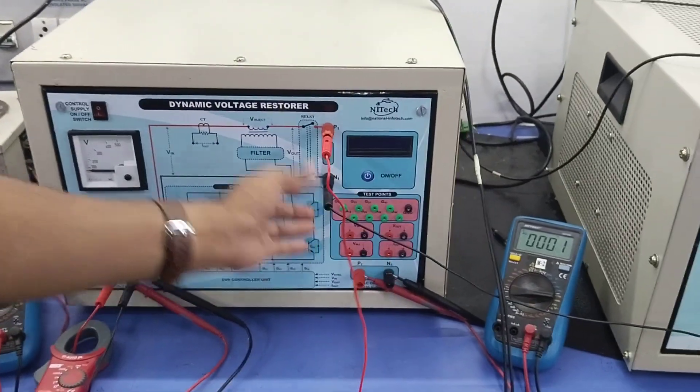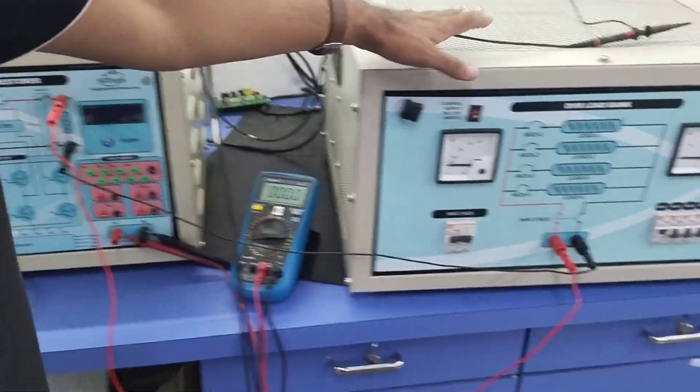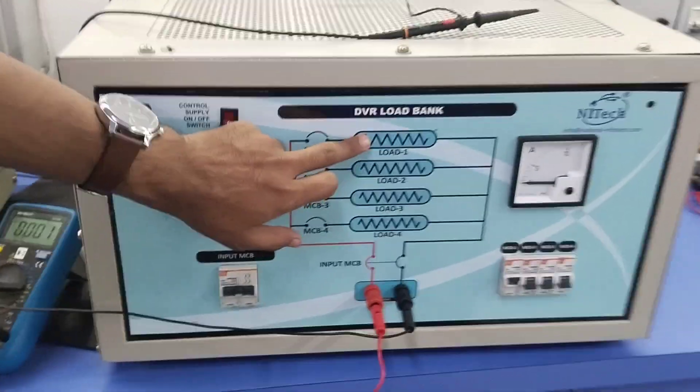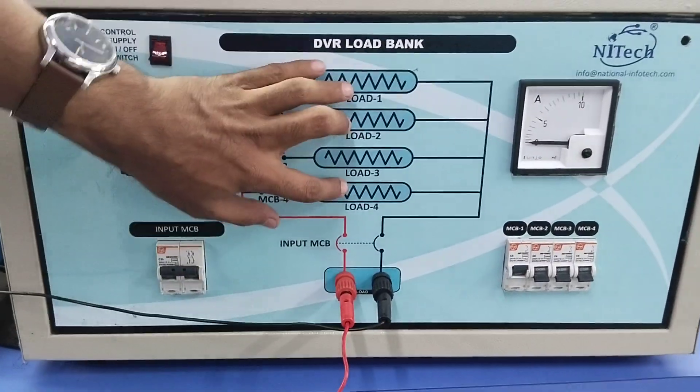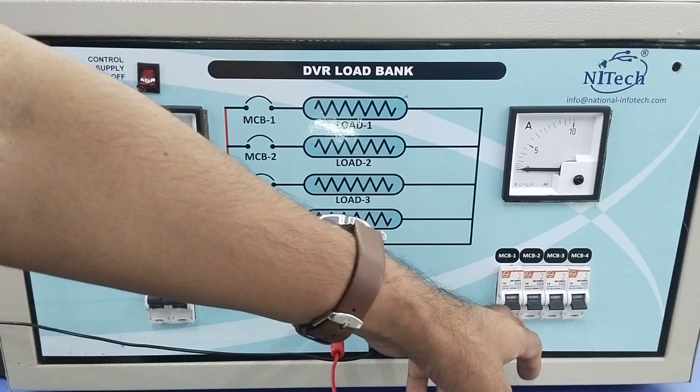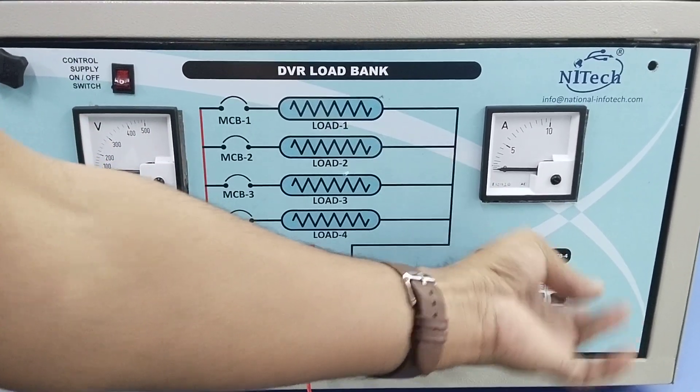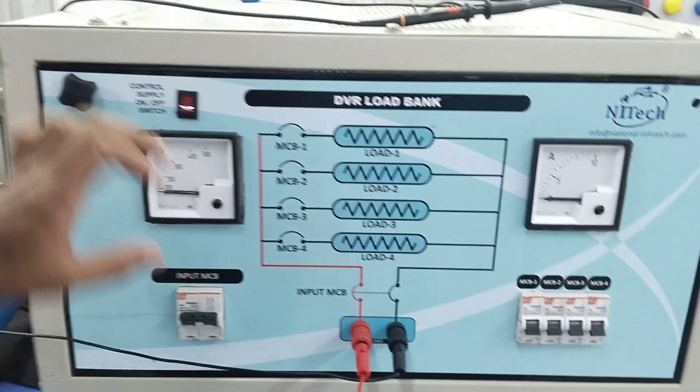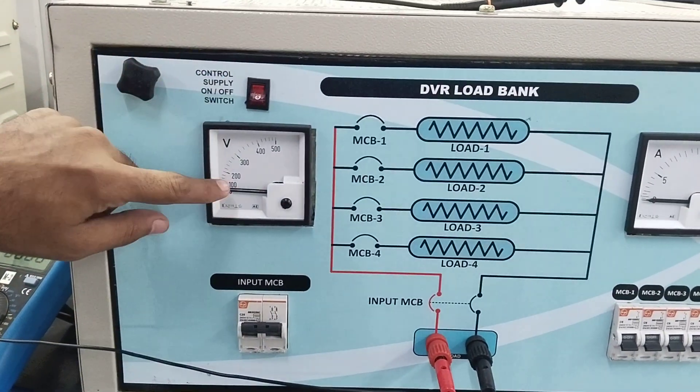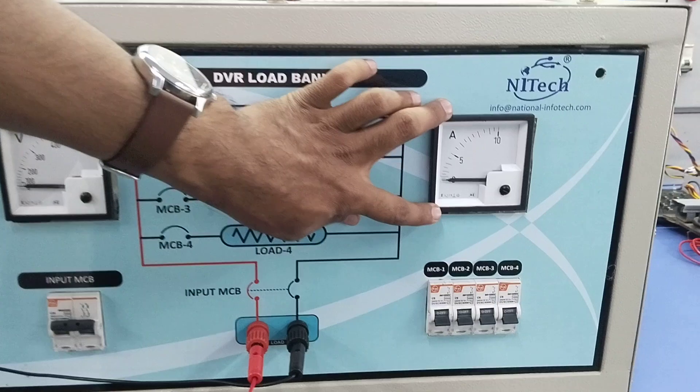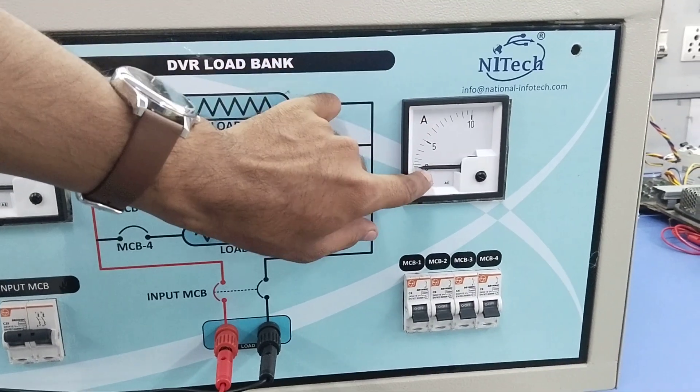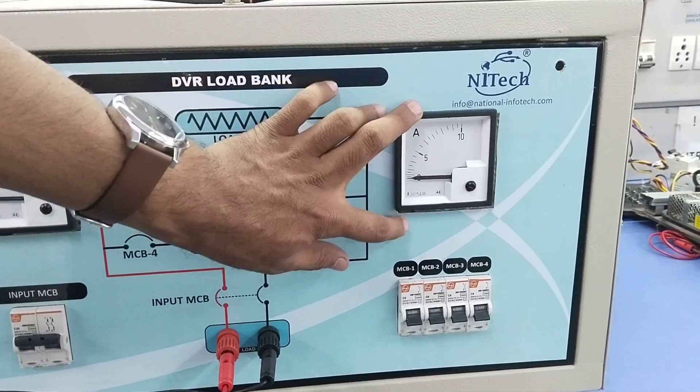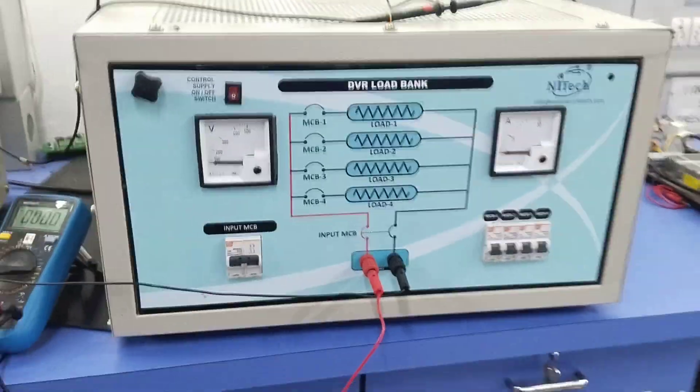Now if we go for the arrangement of loading, here we are also providing one loading arrangement with three different resistor steps. These steps can be included using this MCB, and to observe the voltage across the load bank, one meter is provided. As well as to observe the load current, one ammeter is connected here.